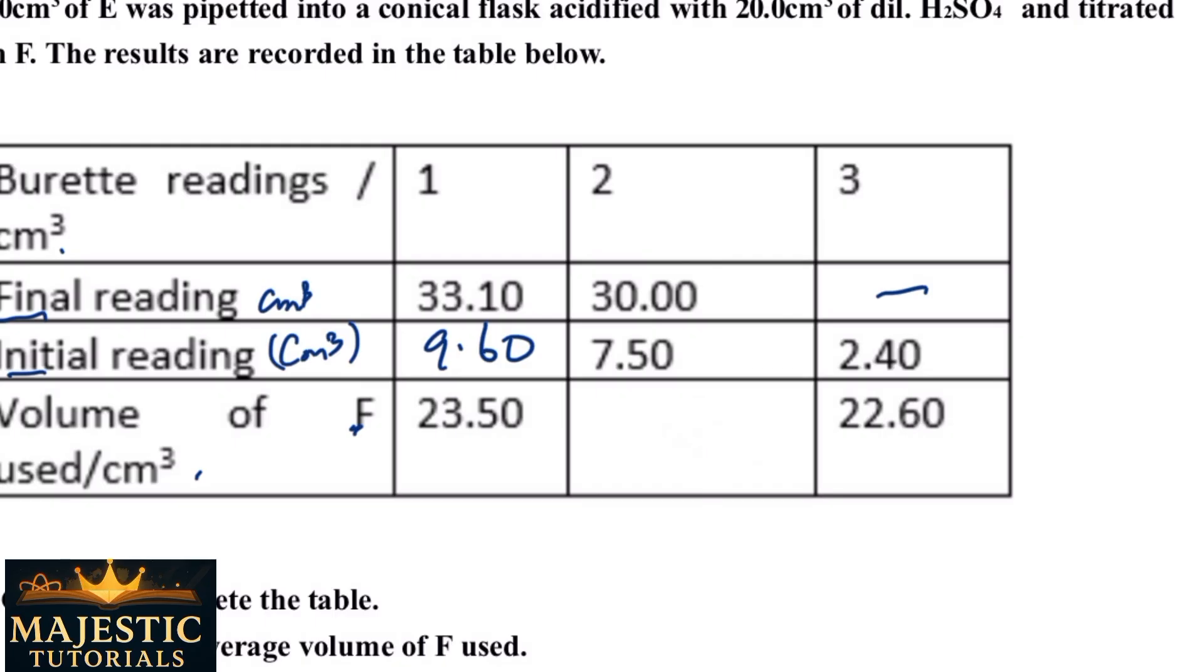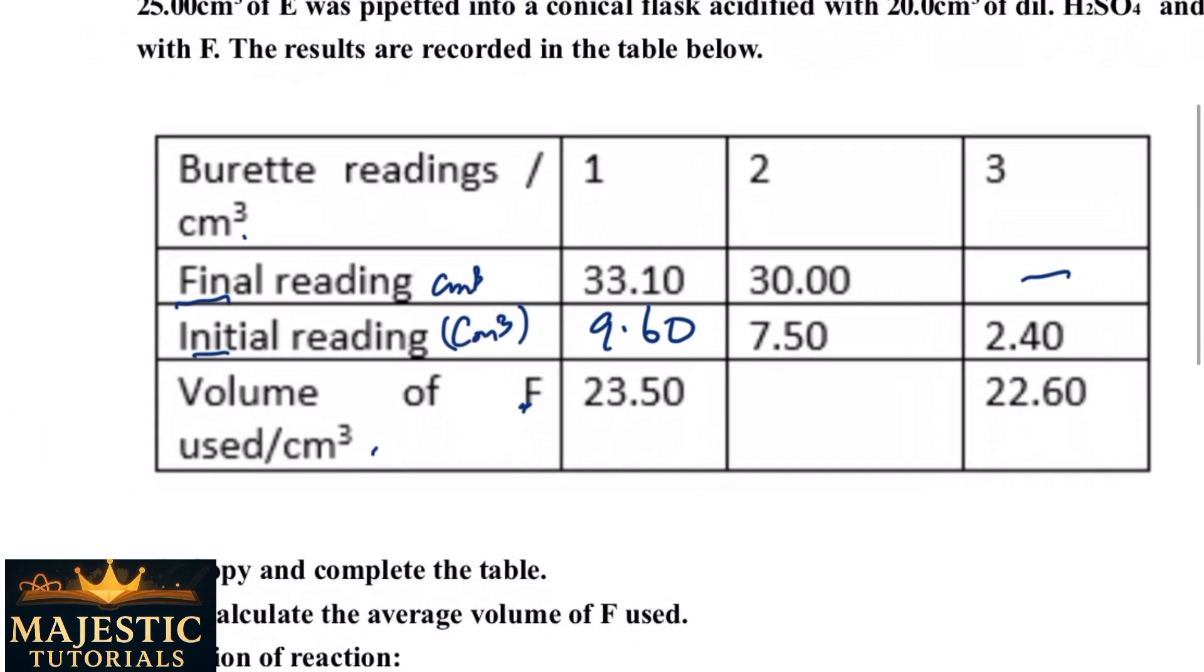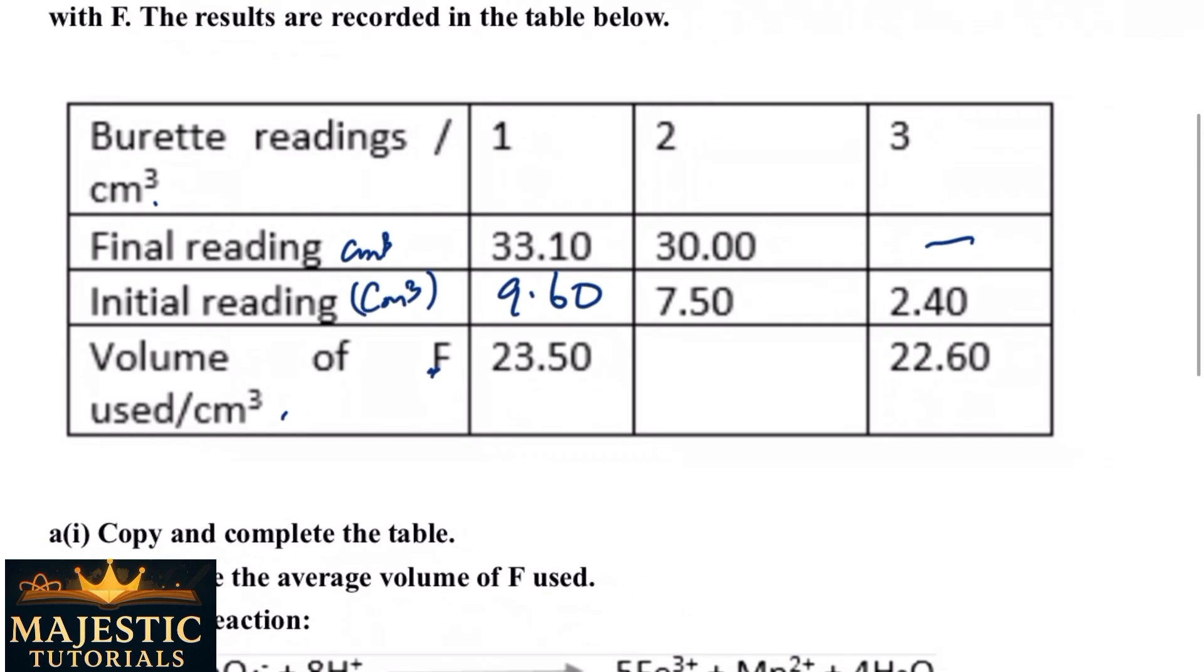So now this is very simple. Our initial was 7.50. The final here was 30. We record initial first before final, but in writing we write final before initial so that the math will be easy for you. So normally 30 minus 7 is 23, but we removed another 0.5, so it's going to be 22.5. That should be here, if I'm correct, of which I know I am. This one they didn't give us what is here to fill in.